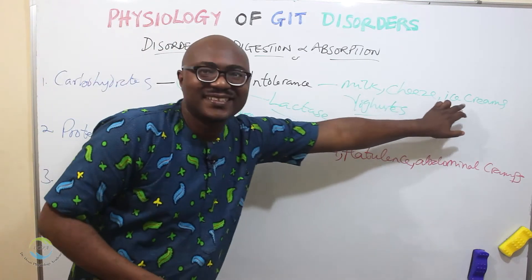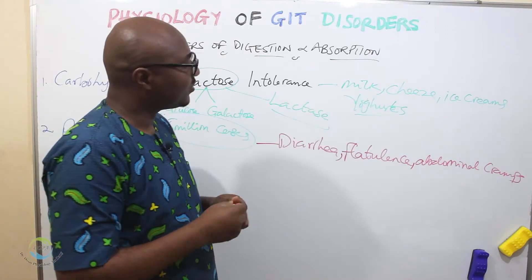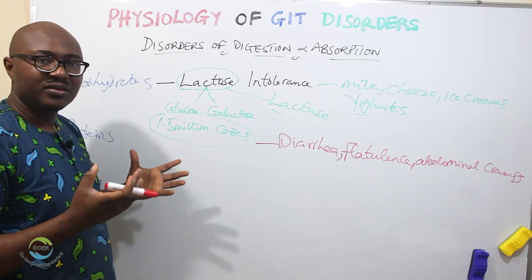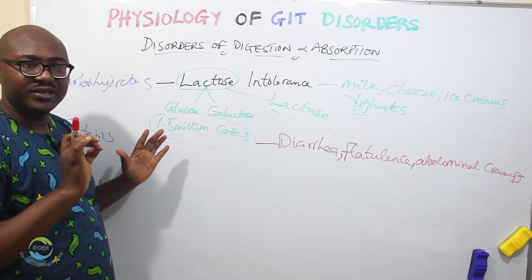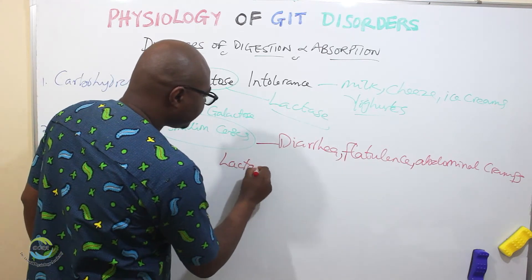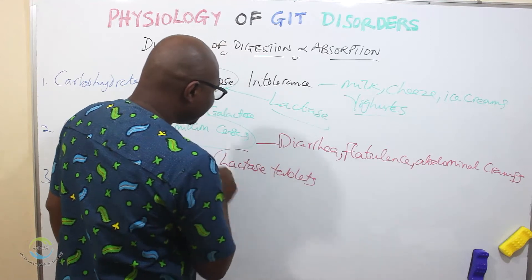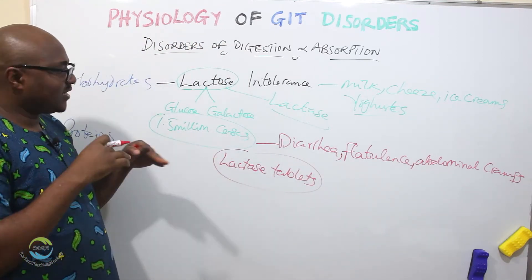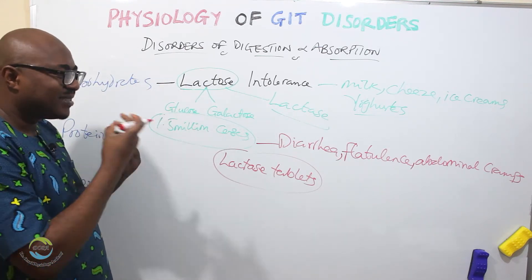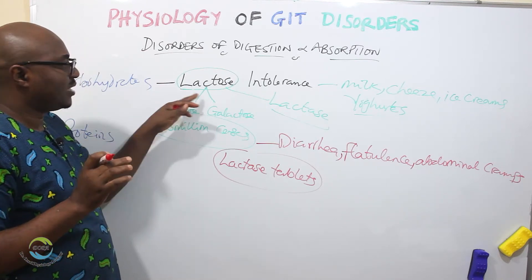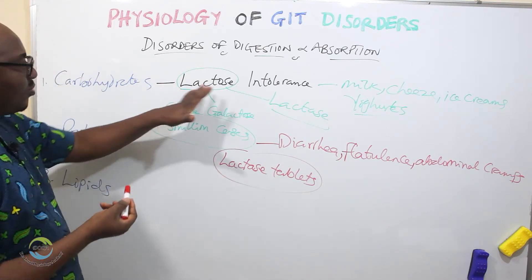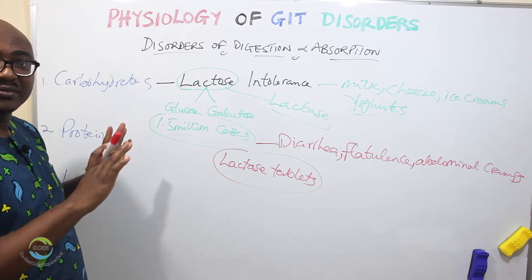Treatment: avoid these things. You avoid milk products and dairy products — don't take too much. But because milk and dairy products have important nutrients, you can still take them using what we call lactase tablets — an artificial enzyme that helps people digest lactose. There are also some milks that have pre-digested lactose. This is how you manage this very common carbohydrate disorder of digestion and absorption.